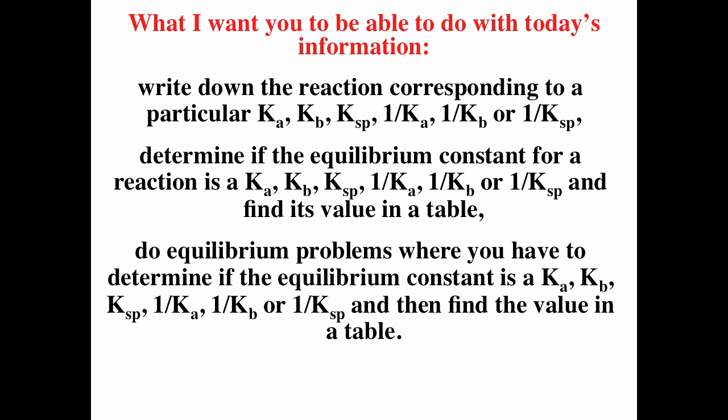I want you to be able to determine if the equilibrium constant for a reaction is a Ka, Kb, Ksp, 1/Ka, 1/Kb, or 1/Ksp. So for instance if you see a reaction — say hydrogen ions plus fluoride ions going to HF — you should be able to recognize that the equilibrium constant for that is 1/Ka of HF. I also want you to be able to do equilibrium problems where you determine whether the constant is Ka, Kb, etc., and find the value in a table.